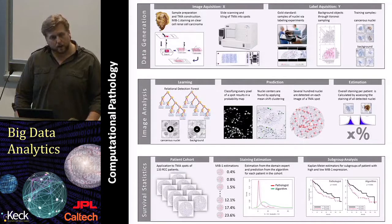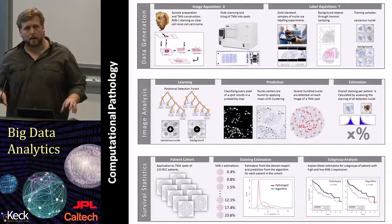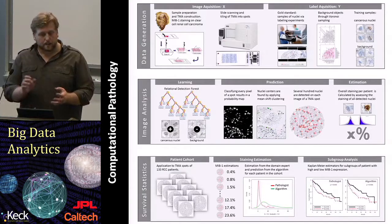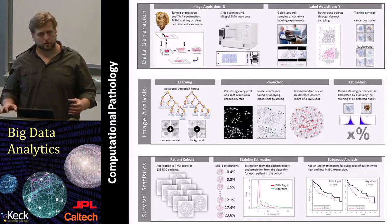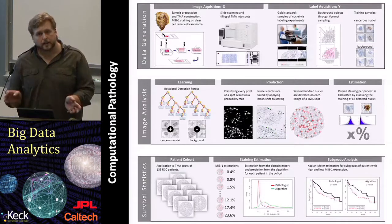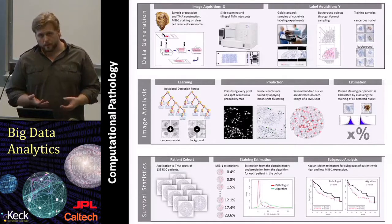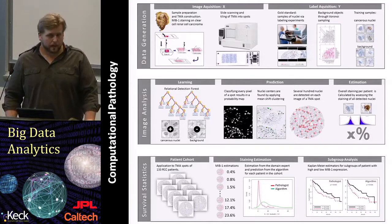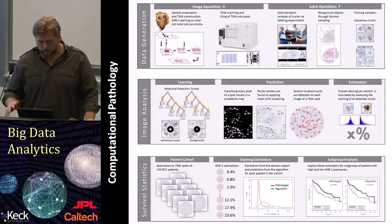Random forests are very well suited for this distributed computation. You can parallelize both training and classification by training single trees at different cores, different processes, or even different machines, and then combining the results. Also during classification, nowadays multi-core chips let you split trees across cores — a very straightforward approach.